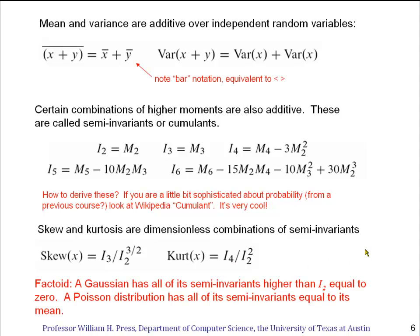So here's a factoid to end with. A Gaussian, that is to say a normal distribution, we're going to learn a lot more about that later, a normal distribution has all of its semi-invariants higher than i₂ equal to zero. So in a certain sense, the Gaussian viewed by moments is the simplest possible distribution. It has all zero moments, or rather semi-invariants, except for the low ones that you need to define where it is and how wide it is. And it turns out, another factoid, a Poisson distribution, we'll learn about later, has all of its semi-invariants equal to its mean. And that's all we really need to know for now about moments.